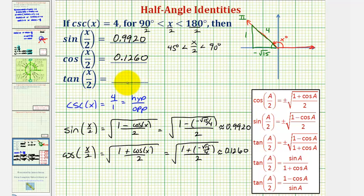And now to find the tangent function value, we could use one of these identities here. But since tangent theta is equal to sine theta divided by cosine theta, let's go ahead and just use the fact that tangent of x divided by two is equal to sine of x divided by two divided by cosine of x divided by two.